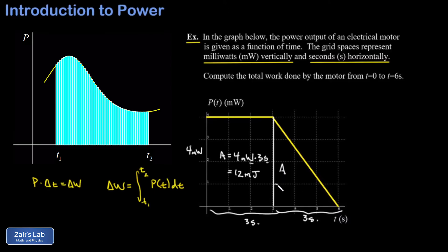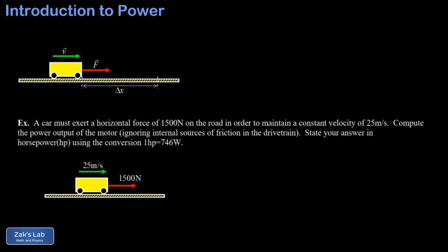This gives me an additional 6 millijoules, and so the total work done by this electric motor on the time interval 0 to 6 is 18 millijoules.